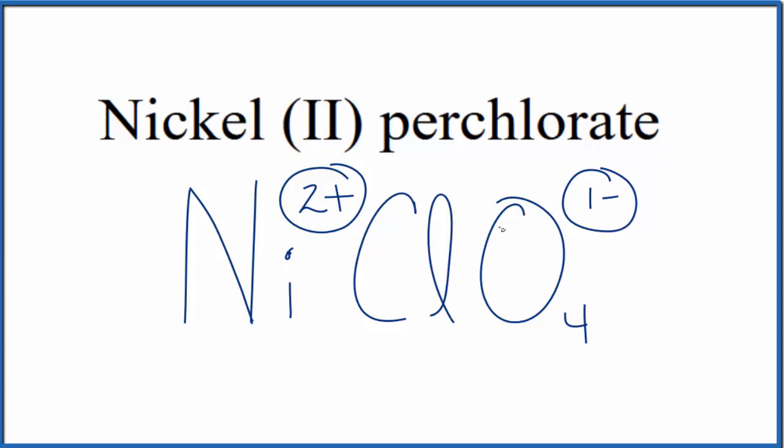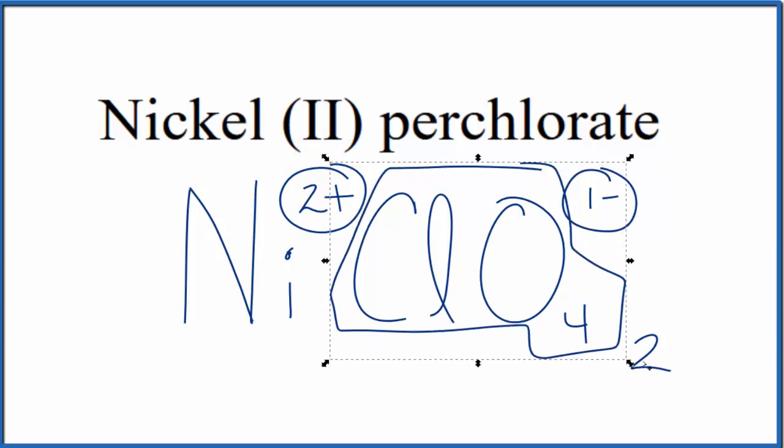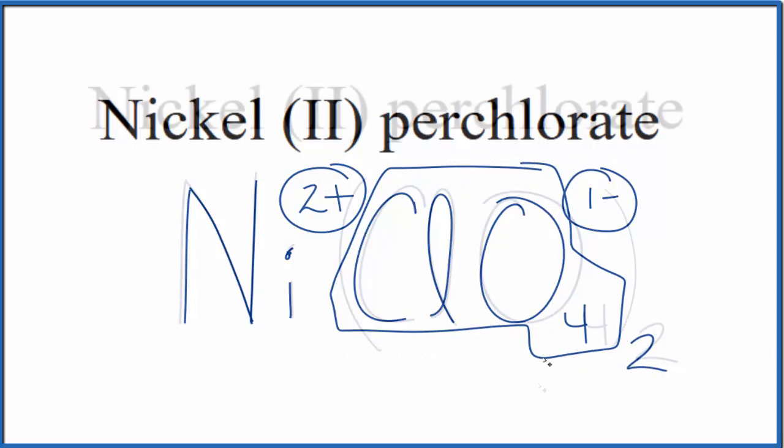Since the perchlorate ion is 1-, if we had two of these, 2 times 1- would be 2-, which balances out the 2+ for a net charge of zero. We need to use parentheses since we have two perchlorate ions.